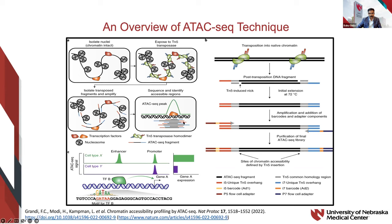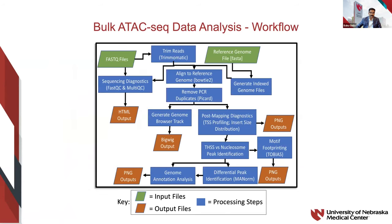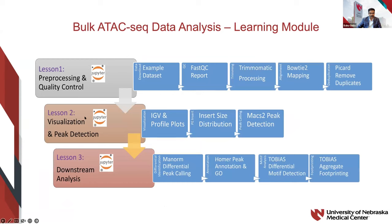Using these peaks you can study different developmental stages, how genes are regulated, and how transcription happens. For example, the promoter region might be accessible in both cell types X and Y, but the enhancer region is accessible only in X. Based on that you can identify different gene regulation conditions and also do motif identification based on sequences in those regions. The bulk ATAC-seq pipeline starts with FASTQ files and ends with motif footprinting, downstream analysis, and peak identification — all packaged into three lessons.